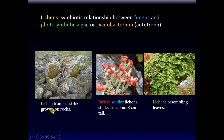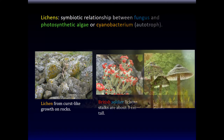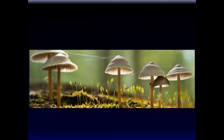Here are some examples. Lichens form crust-like growth on rocks that you see all the time. This one is called 'British soldiers' — named after the Redcoats — with stalks about three centimeters tall. Lichens can also resemble leaves. And that was our survey of the Kingdom Fungi. I hope you enjoyed. Until next time, As-salamu alaykum.